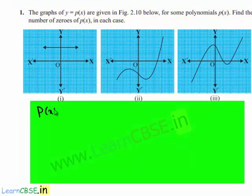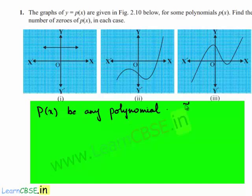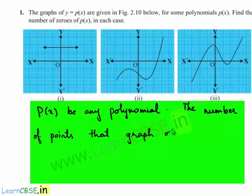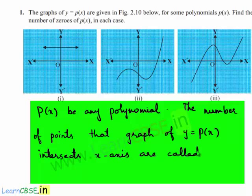Let p of x be any polynomial. The number of points that the graph of y equal to p of x intersects the x-axis are called zeros of the polynomial p of x.